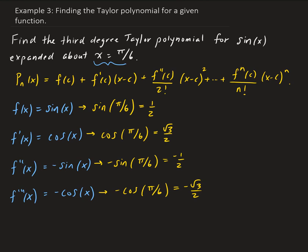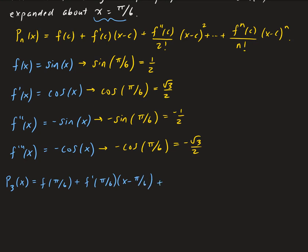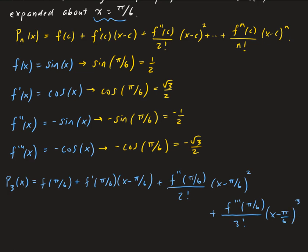Now we can substitute these into our Taylor polynomial formula. For a third degree polynomial, we have: f of pi over 6, plus f prime of pi over 6 times (x minus pi over 6), plus f double prime of pi over 6 divided by 2 factorial times (x minus pi over 6) squared, plus the third derivative of pi over 6 divided by 3 factorial times (x minus pi over 6) to the third power.